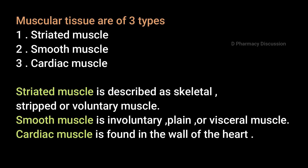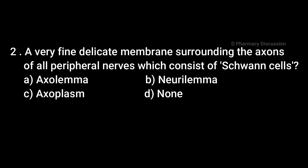Striated Muscle is described as Skeletal, Stripped, or Voluntary Muscle. Smooth Muscle is Involuntary, Plain, or Visceral Muscle, and the Cardiac Muscle is found in the wall of the heart.